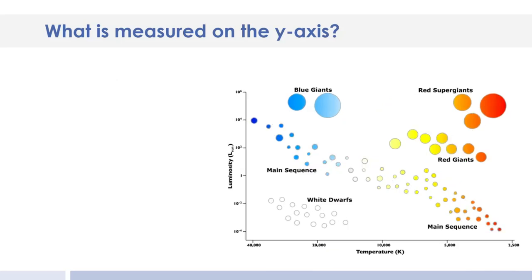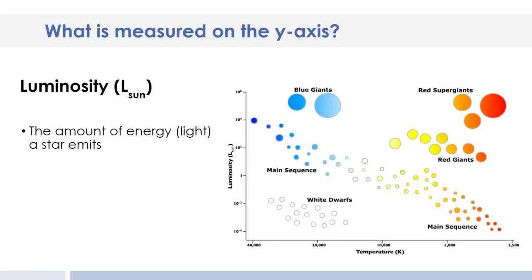If we look at the y-axis, you'll see that it's labeled luminosity and has a little L sun next to it, which I'll talk to you about briefly in a moment. Luminosity is the amount of energy a star emits, also known as the amount of light a star emits, because light is energy. It's sometimes referred to as brightness or magnitude.